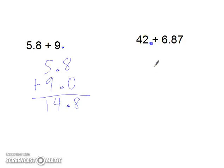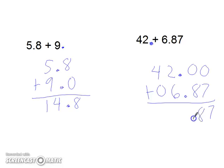Decimal goes after my number. 42 point something. 6.87. Remember we're lining the decimal points up like buttons on a shirt. I can add zeros there, there, and there. 7, 8. 2 plus 6 is 8. 4 plus 0 is 4.